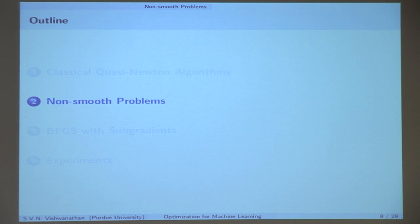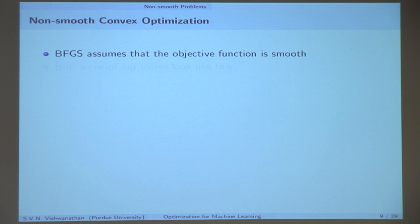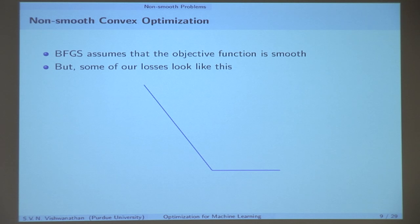Now let's go to what happens when you have non-smooth problems — this is what we are interested in. BFGS of course has very critical assumptions built in. Critically, at the heart of BFGS is the assumption that the objective function is smooth, so you can compute a gradient and do nice things. However, we are working with things like the hinge loss, which is not differentiable.